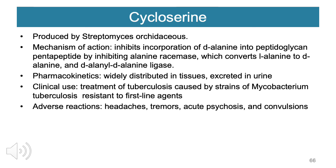Cycloserine is produced by Streptomyces orchidaceus. Its mechanism of action inhibits incorporation of D-alanine into the peptidoglycan pentapeptide by inhibiting alanine racemase — which converts L-alanine to D-alanine — and D-alanine ligase. It is widely distributed in tissues and excreted in the urine. Clinical use: it is used as a secondary drug for treatment of tuberculosis caused by strains of Mycobacterium tuberculosis resistant to first-line agents. Adverse reactions are predominantly neurologic — headaches, tremors, acute psychosis, and convulsions.